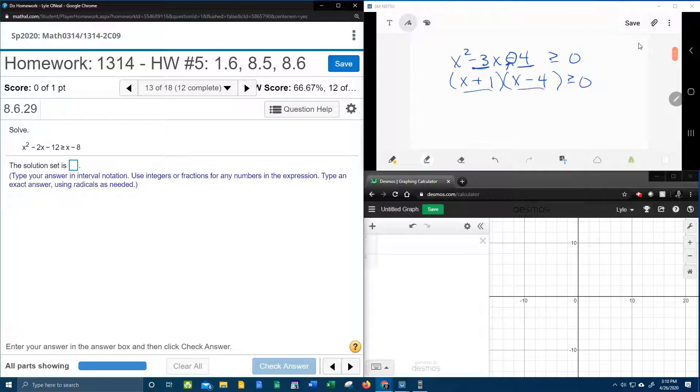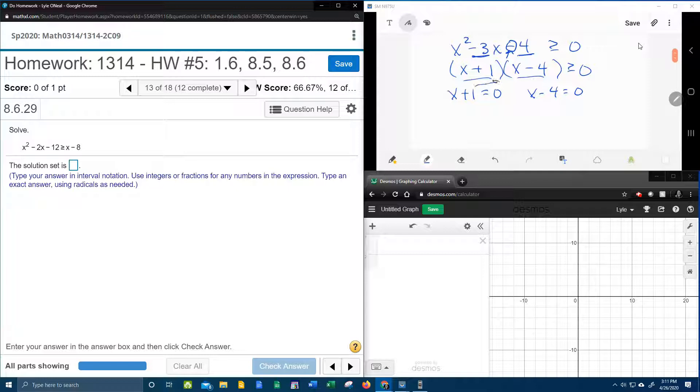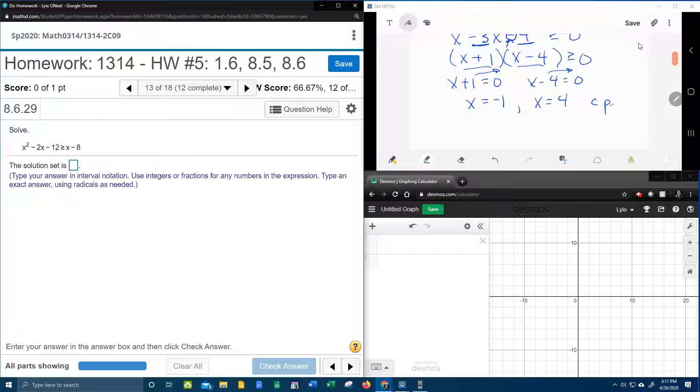And so then what we're going to do is we're going to set each factor equal to 0, and that's going to give me our critical points. So moving the 1 and the 4, that's going to say x equal negative 1, and x equal 4. And like I said, we're going to call those critical points.